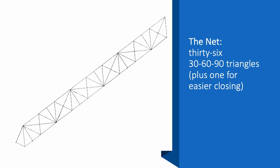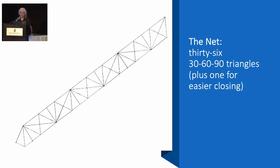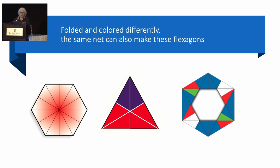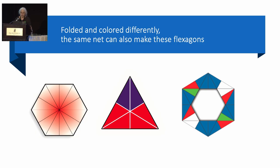And here is the net for the rhombus. It's composed of 30-60-90 triangles, 36 of them. And I add an extra one for easier closing. But that same net, if you color it differently and fold it differently, it will give you these flexagons as well. And if you make that strip twice as long and color it and fold it up differently, you can get these two flexagons. So it's a very interesting net that lends itself to lots of things.